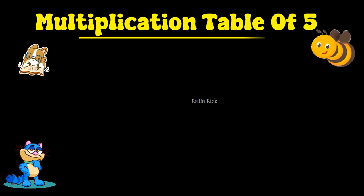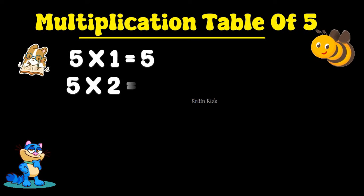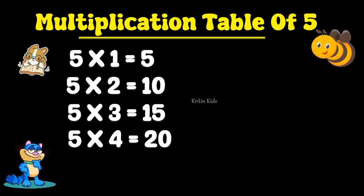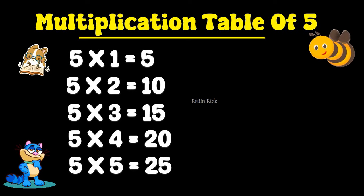Multiplication table of 5. 5 1s are 5, 5 2s are 10, 5 3s are 15, 5 4s are 20, 5 5s are 25.